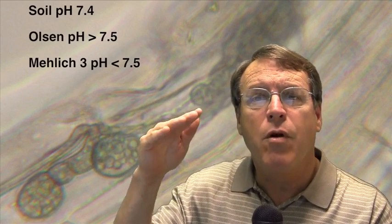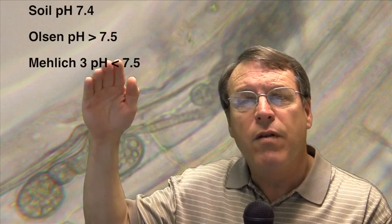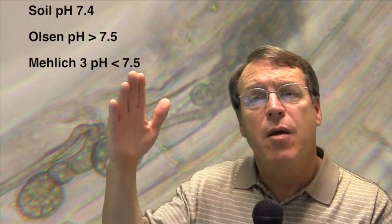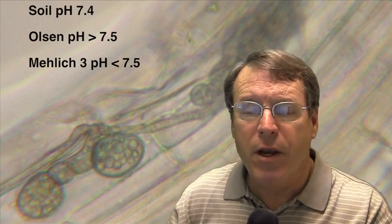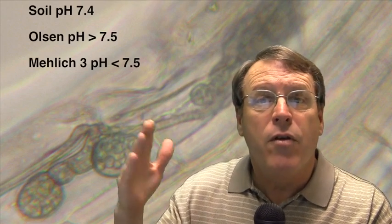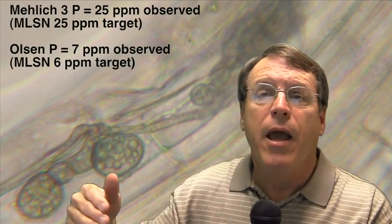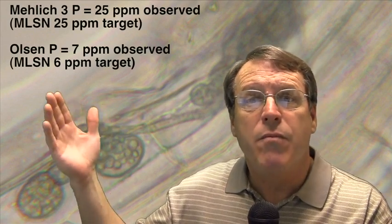We wanted to check the soil levels and pH, which influences which analytical procedure to use. The pH was 7.4, right on the guideline where we split. Above 7.5, we use Olsen phosphorus, and below 7.5, we use Mehlich-3. We looked at both levels: Mehlich-3 phosphorus came in at 25 ppm, and Olsen phosphorus at 7 ppm.